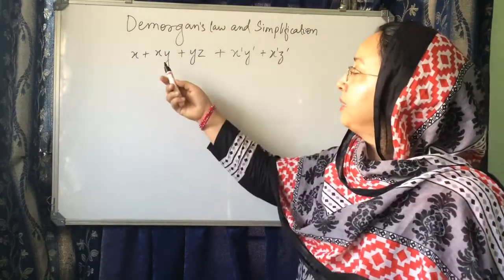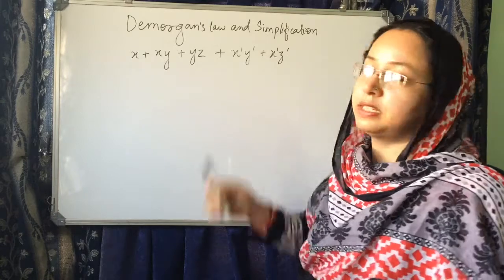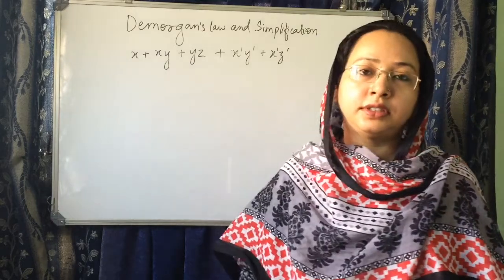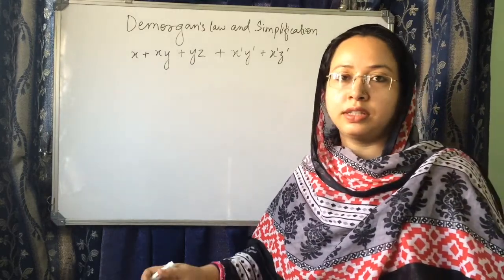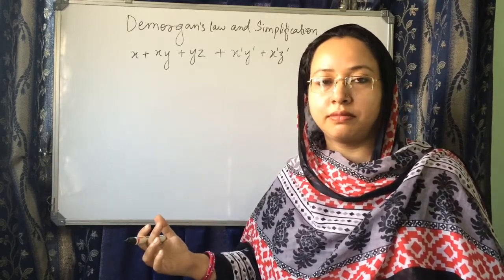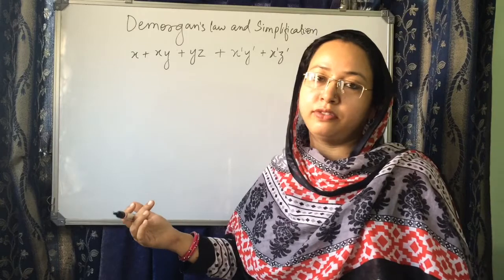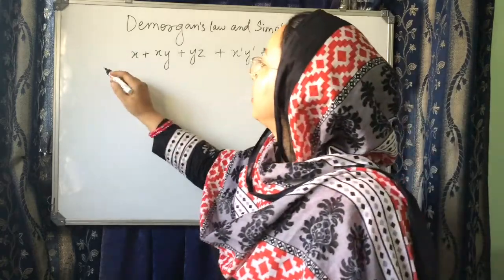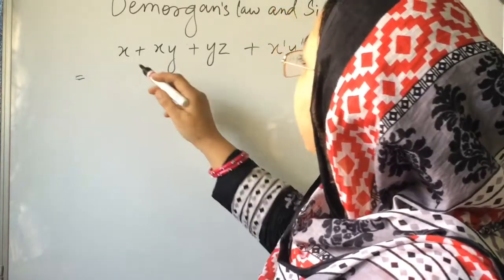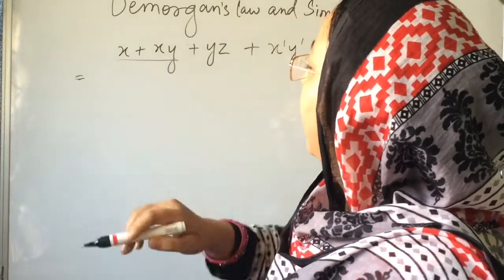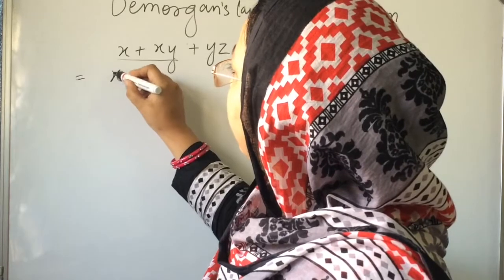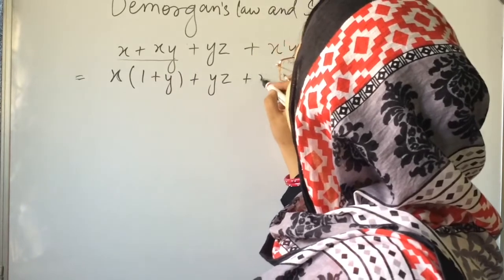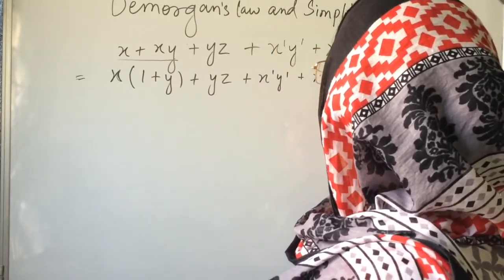Now there is a problem: x plus xy plus yz plus x bar y bar plus x bar z bar, and we have to simplify it. You can do it in different ways — it is not necessary that you follow the same steps, but the result should be the same. If you are not getting the same result, it means you have done something wrong somewhere. So let's start: taking x plus xy and factoring out x, it will become x(1 plus y) plus yz plus x bar y bar plus x bar z bar.